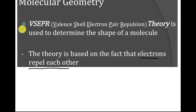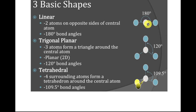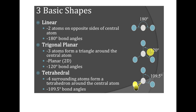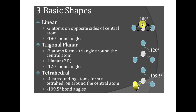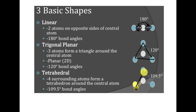So to recap: we have linear structures, trigonal planars, and tetrahedrals. If I have two areas of electrons — negatively charged — they're going to repel each other and try to get as far apart as possible, so those atoms are 180 degrees away. Inject a third one and you push these two down and end up with 120 degrees. Trigonal because it looks like a triangle, and planar because it's a flat molecule. Then your tetrahedral structure has that three-dimensional look, kind of like a pyramid.